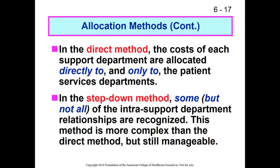We will not talk about the third method that much — I won't demonstrate it just because of its complexity. To review: with the direct method, costs of each support department are allocated directly to and only to the patient services departments. Whereas with the step-down method, there is a process whereby we share the direct costs of the support departments in a progressive step-down manner with some of the other support departments before those other departments' costs are shared to the respective profit center or revenue center sections, which in a hospital would be those that generate patient service revenue.